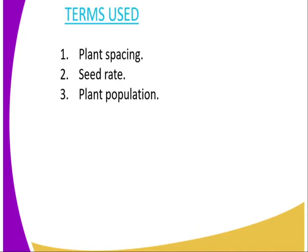Terms used in this topic: the first one is plant spacing. Plant spacing refers to the distance between one plant to the next, and also between one row to the other. The second term is seed rate, and seed rate refers to the amount of seed which is used on the farm per hectare.